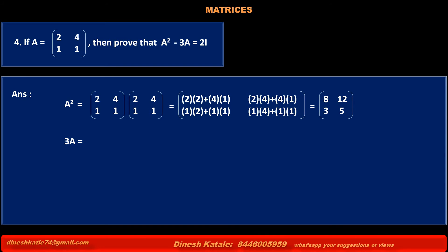Now, 3A is equal to scalar 3 multiplied by matrix A [2, 4; 1, 1]. This equals multiplying by 3 to each element: 3 times 2 is 6, 3 times 4 is 12, 3 times 1 is 3, 3 times 1 is 3. That is matrix [6, 12; 3, 3].